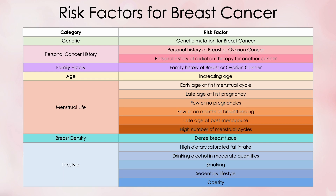Genetic mutations are in green. Personal history of breast cancer and personal history of radiation therapy for another cancer are in pink. Family history of breast cancer is in lavender. Increasing age is in yellow. Early age at first menstrual cycle, late age at first full-term pregnancy, few or no pregnancies, no breastfeeding, and late age at first menopause are in orange. Dense breast tissue is in turquoise. High dietary saturated fat intake, drinking alcohol in moderate quantities, smoking, sedentary lifestyle, and obesity are in blue for the lifestyle category.